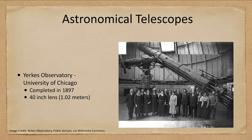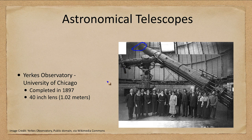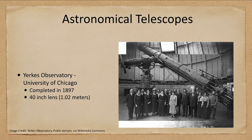Let's look at a few specific telescopes. This is the largest refracting telescope — you can get an idea of how large it is, with the large lens up at the top and the eyepiece all the way down at the bottom. It takes a lot of material to balance this very massive tube, and remember the light has to go all the way through that tube. This was completed in 1897 and features a 40-inch lens, the largest refracting telescope to date.